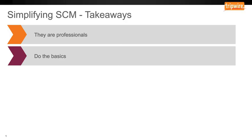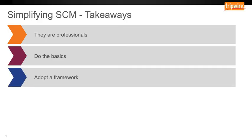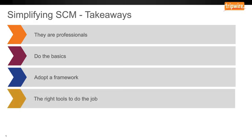My second point would be: do the basics. As we saw in Jeff's presentation, advanced persistent threats were only responsible for 0.01% of the attacks throughout 2015. 99.99% of the attacks were through known vulnerabilities, and the attacks were made with commodity tools — all of these can be blocked with basic security hygiene. My third point would be: adopt a framework. The great thing about frameworks is they change with the threat landscape, so they stay reasonably up to date. They provide best practice advice across industries, and they allow you to use their experts to support your security efforts.